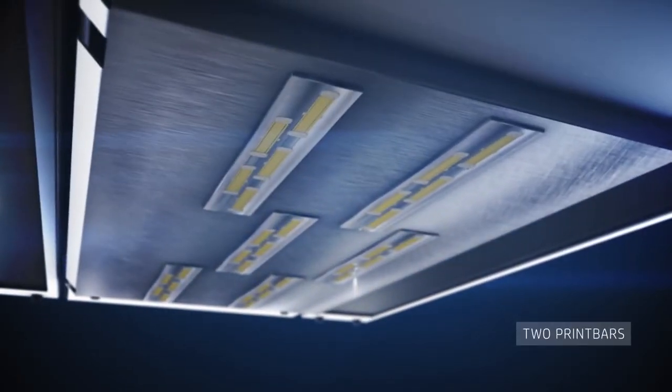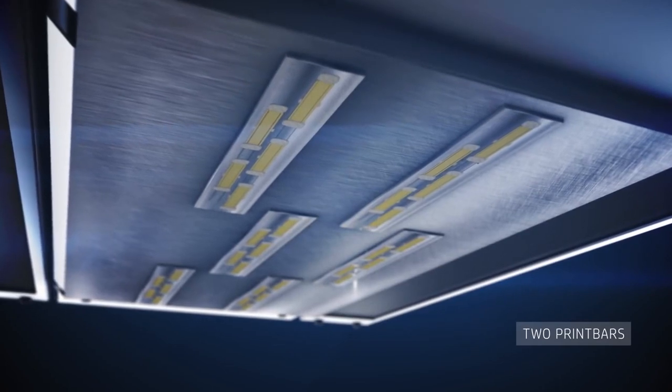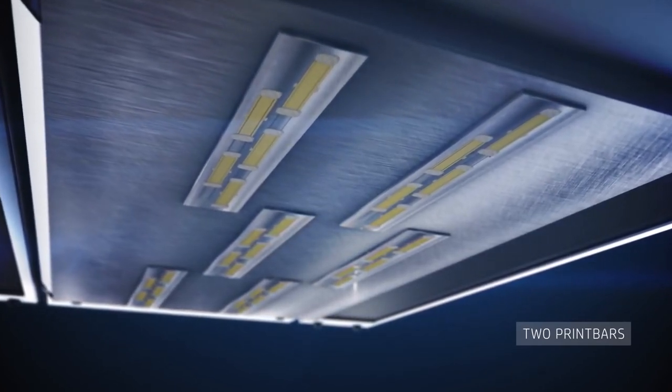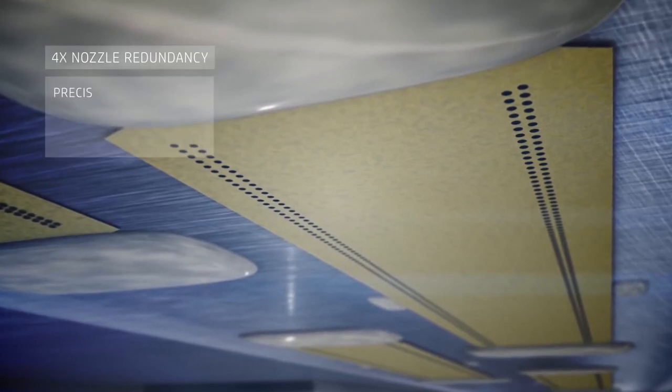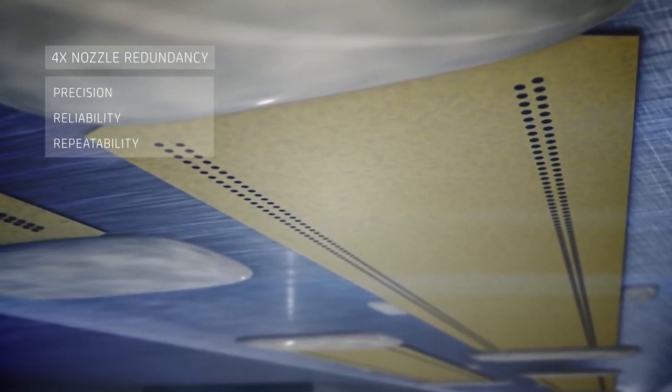Inside the printer, the carriage features six print heads, arranged in two print bars. Up to four different nozzles can print HP binding agent in the same 21 micron grid on the powder bed, providing four times nozzle redundancy.